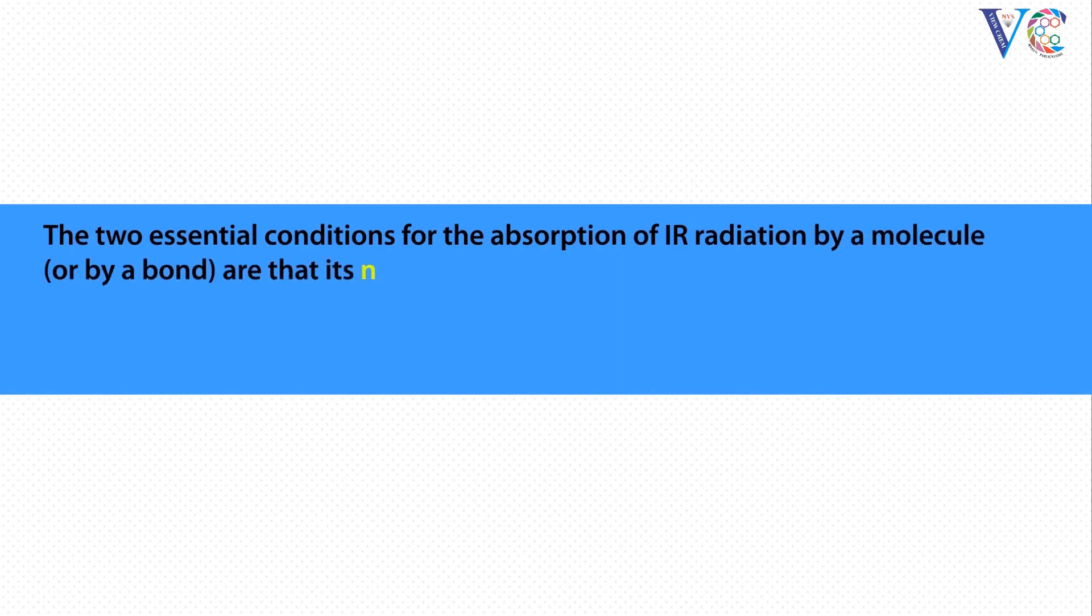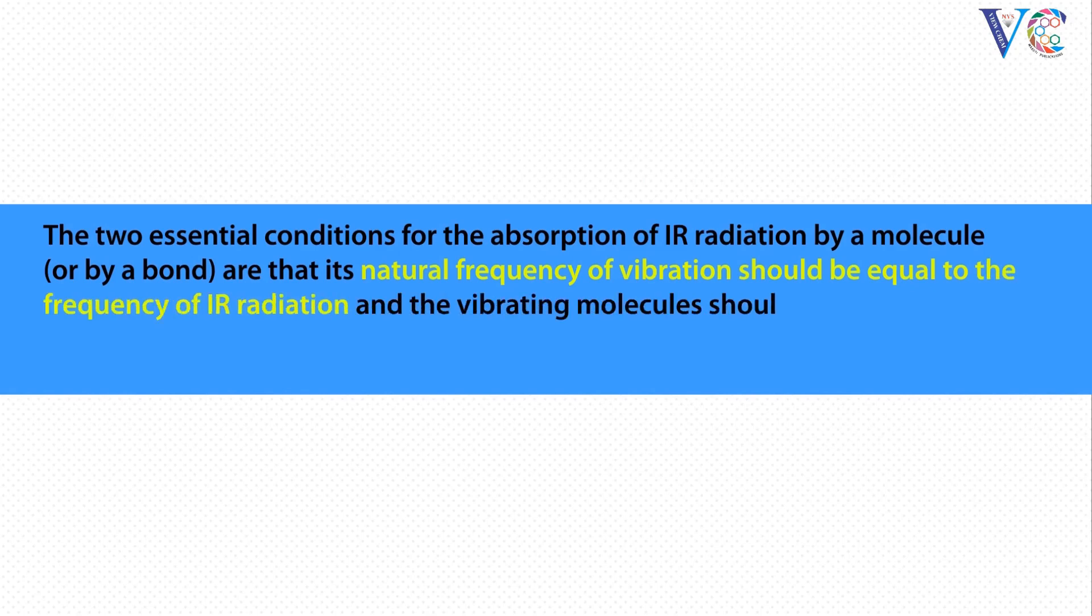The two essential conditions for the absorption of IR radiation by a molecule or by a bond are that its natural frequency of vibration should be equal to the frequency of IR radiation, and the vibrating molecules should have an oscillating dipole in order to interact with the electric component of IR radiation.